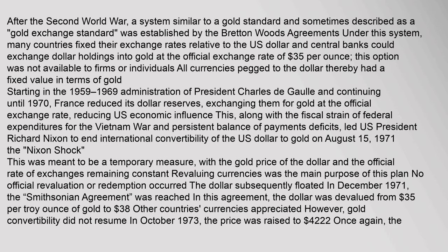After the Second World War, a system similar to a gold standard — sometimes described as a gold exchange standard — was established by the Bretton Woods agreements. Under this system, many countries fixed their exchange rates relative to the US dollar, and central banks could exchange dollar holdings into gold at the official exchange rate of $35 per ounce. Starting in the 1959–1969 administration of President Charles de Gaulle and continuing until 1970, France reduced its dollar reserves, exchanging them for gold at the official exchange rate, reducing US economic influence. Along with fiscal strain from the Vietnam War and persistent balance of payments deficits, this led US President Richard Nixon to end international convertibility of the US dollar to gold on August 15, 1971 — the Nixon Shock.